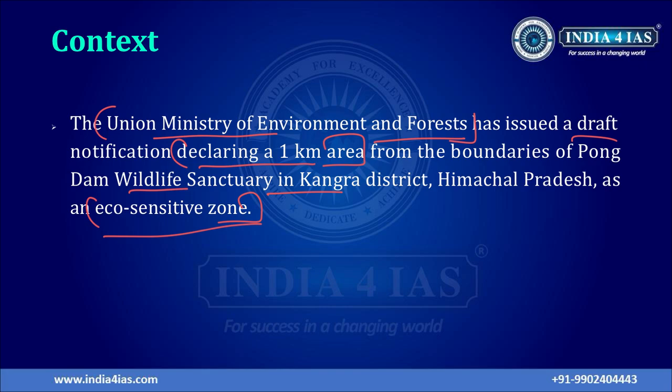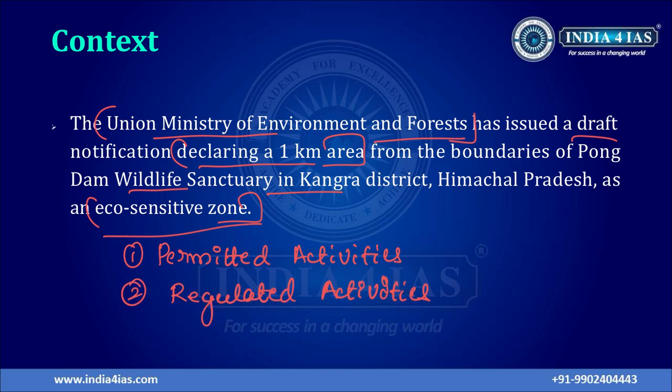In an Eco-Sensitive Zone, three kinds of activities exist: prohibited, regulated, and permitted. Permitted activities include ongoing agricultural or horticultural practices, rainwater harvesting, organic farming, use of renewable energy sources, adaptation of green technology.